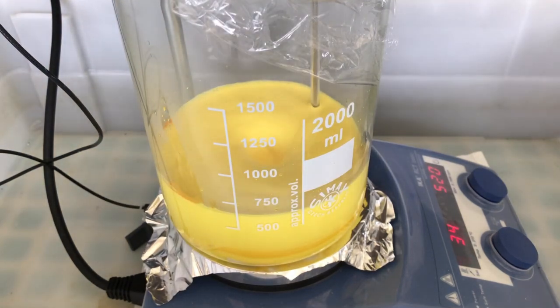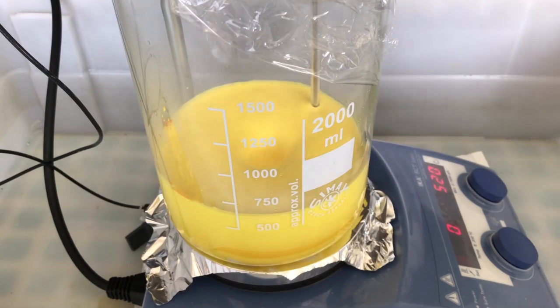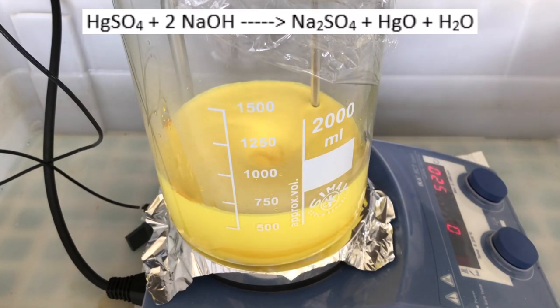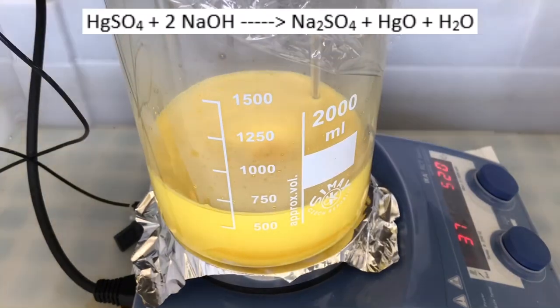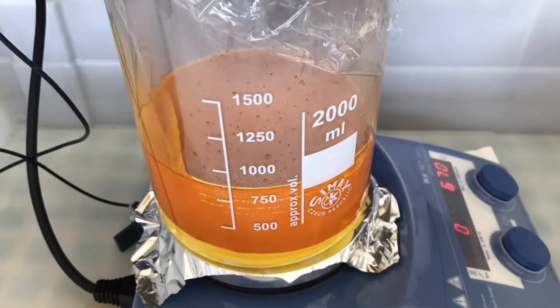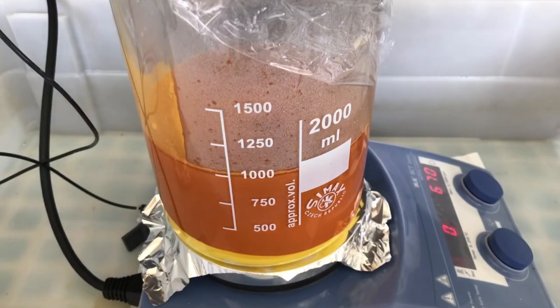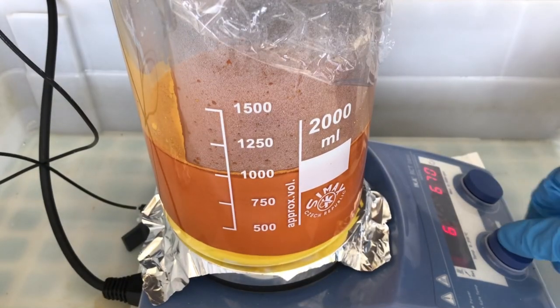Chemically, both forms of mercuric oxide are exactly the same, but I like the red mercury oxide a little more. The reaction taking place is the following: mercury 2 sulfate reacts with sodium hydroxide to form sodium sulfate, mercuric or mercury 2 oxide, and water. As more sodium hydroxide was added, the solution first became orange, and in the end, more or less red.